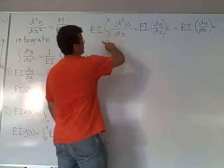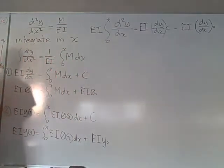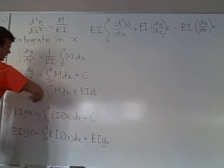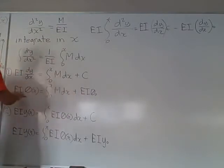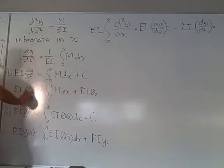Our constant comes out to be modulus of elasticity times moment of inertia times our initial angle, and you can see that from up here. This is how we're going to determine our equation for the slope. Once we do this integration, then we can bring the EI back over, divide everything by that, and that's going to be our slope in x, our slope in terms of x.